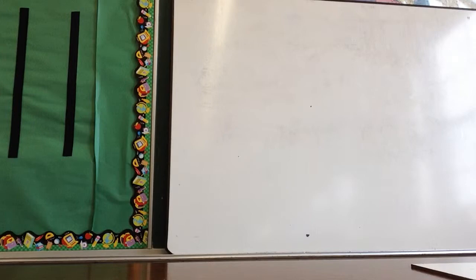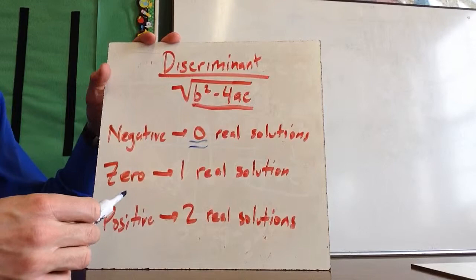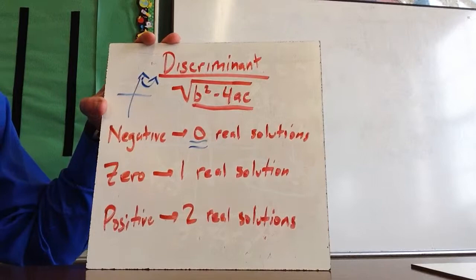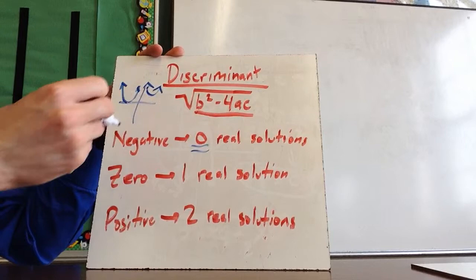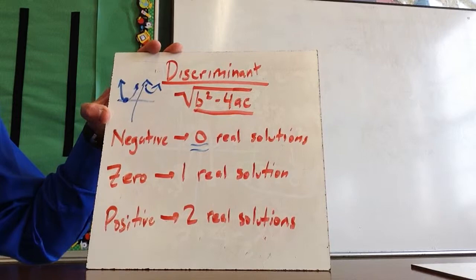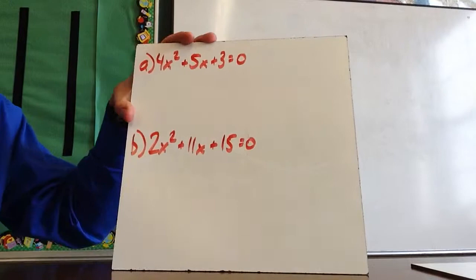These real solutions are essentially the x-intercepts. If the discriminant is negative, the parabola has zero x-intercepts — it never crosses the x-axis. If it's zero, the vertex touches the x-axis at exactly one point. If positive, the parabola crosses the x-axis twice — two x-intercepts. Let's practice finding how many real solutions there are using just the discriminant, b squared minus 4ac.